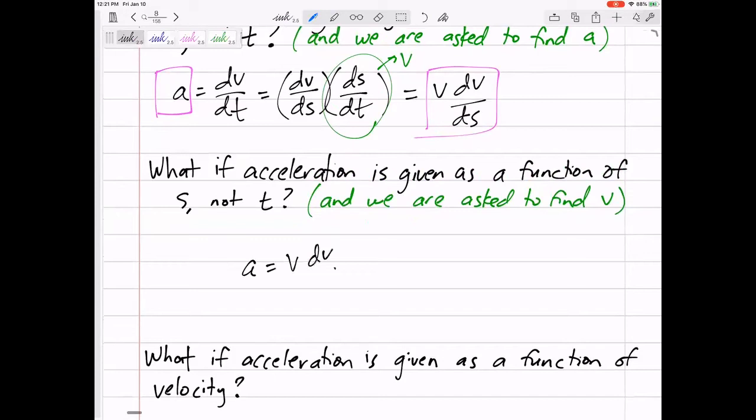Let me multiply through: a ds equals v dv, and then I would take the integral of both sides. So integral a ds equals integral v dv. That's on your formula sheet as well. If acceleration is in terms of s, it's still an integral to get to where we're going to get to velocity.